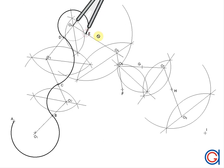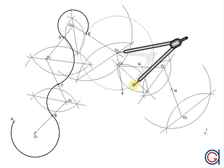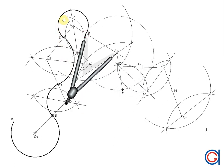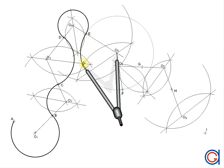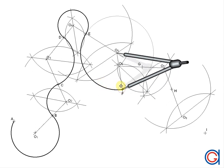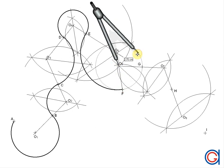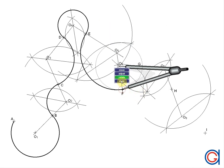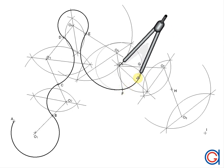Setting the compass on O5 with radius O5E, we continue the arc in the opposite direction, joining point E to point F. Then setting our compass on O6 with radius O6F, we join point F to G in the opposite direction, as can be seen here.